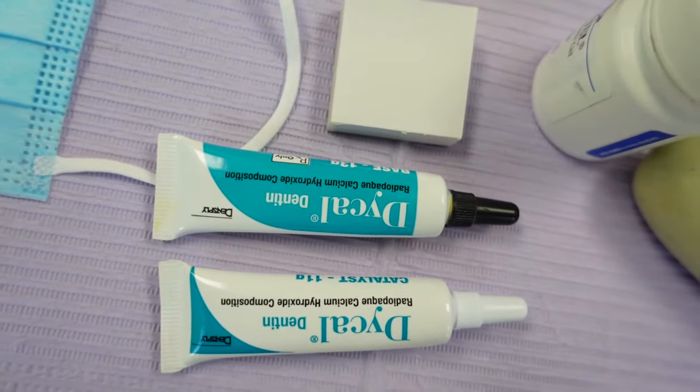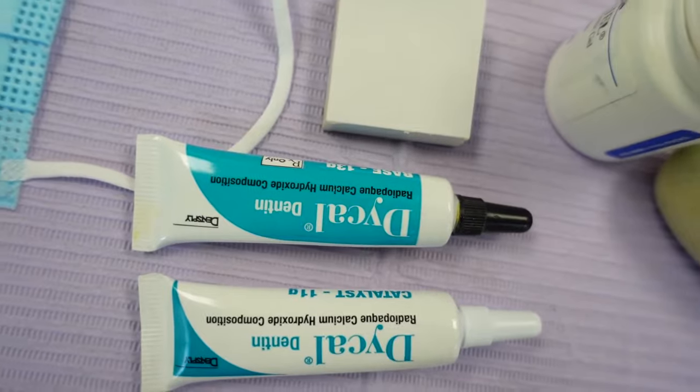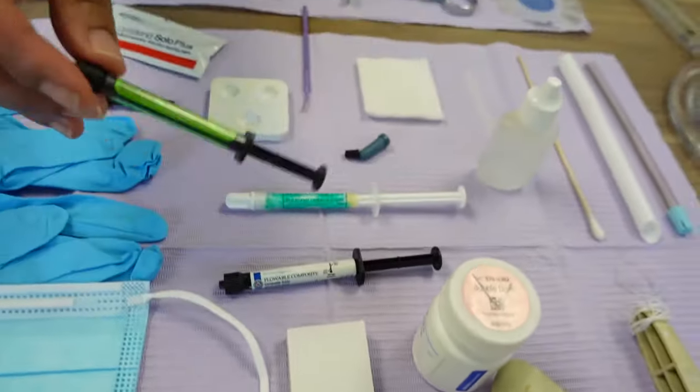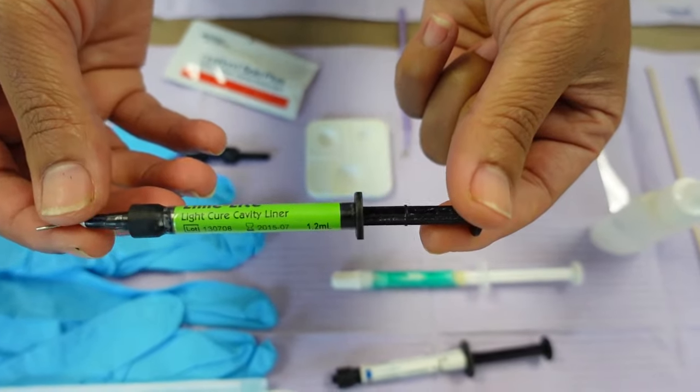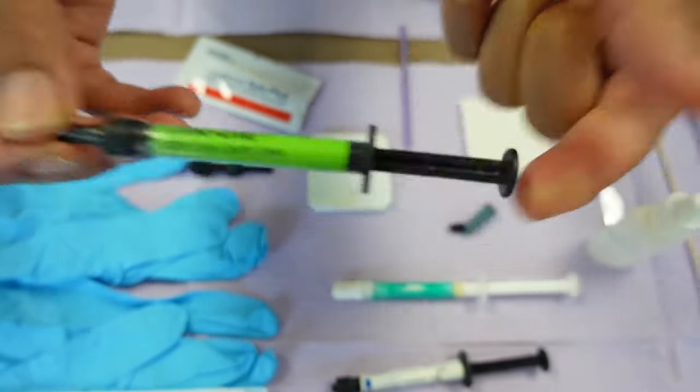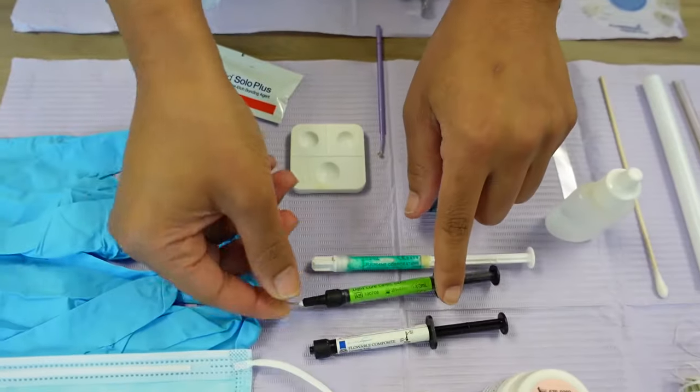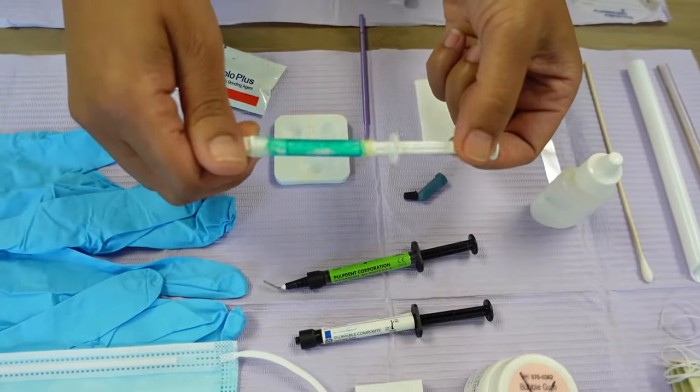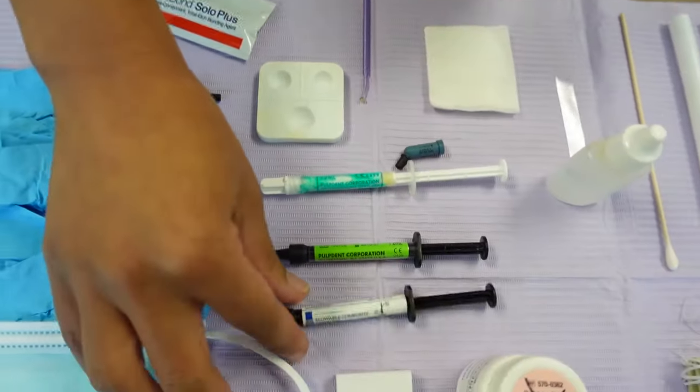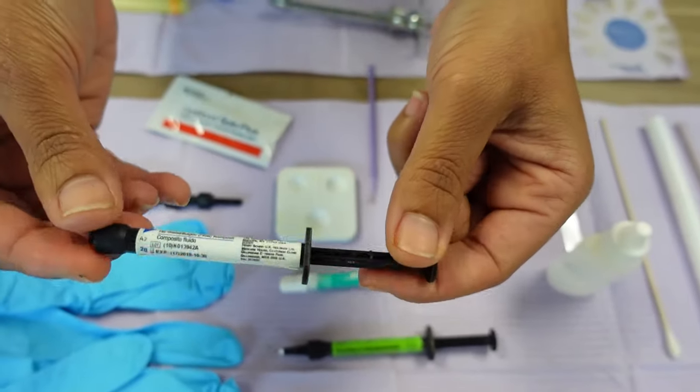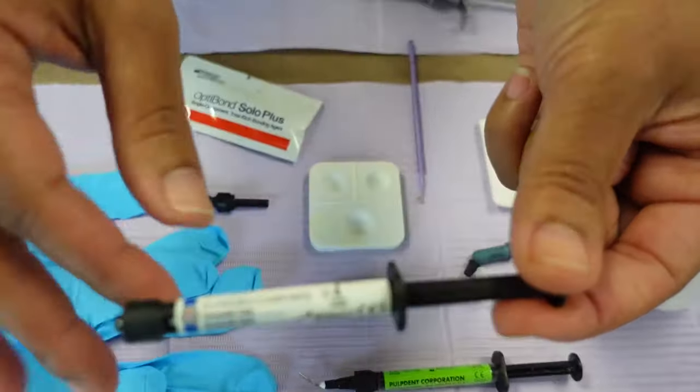We also have Lime Lite—this has become very popular. The doctor likes to use this as a cavity liner versus the Dical, but it depends on the doctor you're working for. This is a sample etch because that's always used before anything else. Flowable is used particularly sometimes—doctors like to use that just to line it a little bit before they actually put the real composite on top of the tooth.